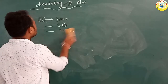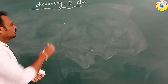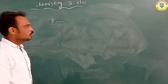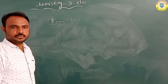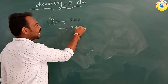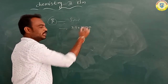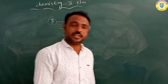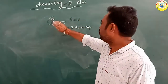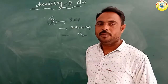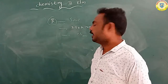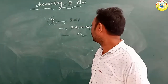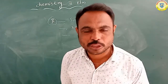Beta sulphur is mainly a solid compound. It has a melting point of 392 Kelvin and is dissolved in CS2, that is carbon disulphide.